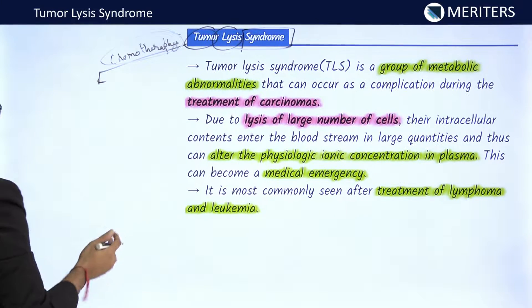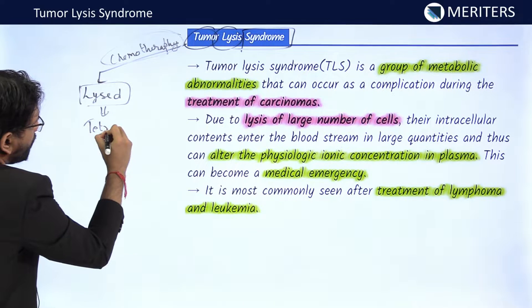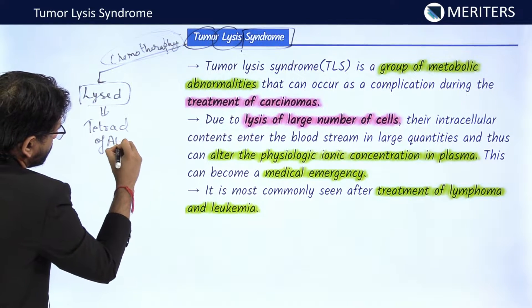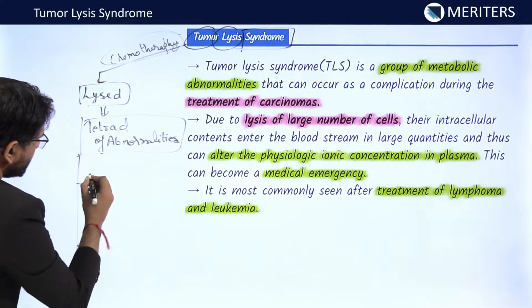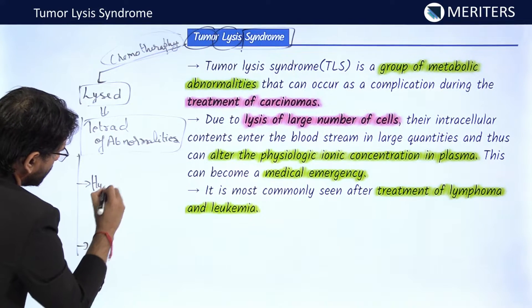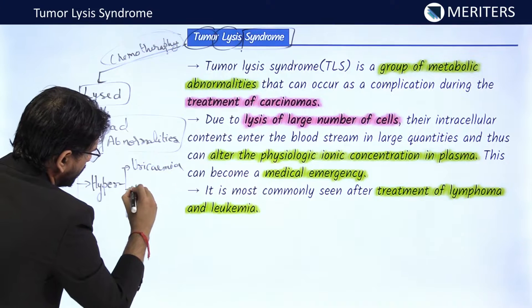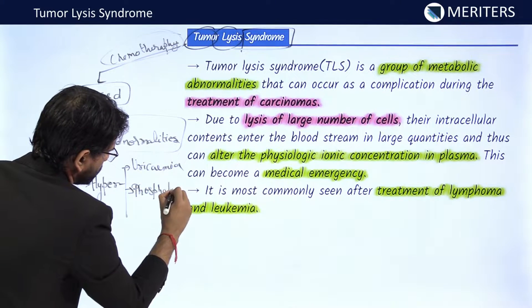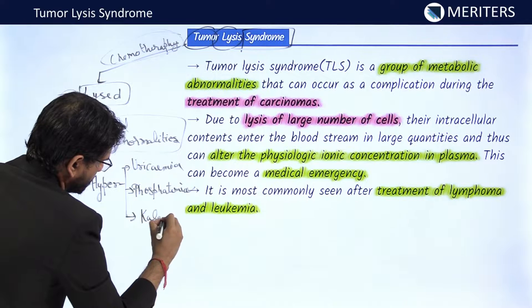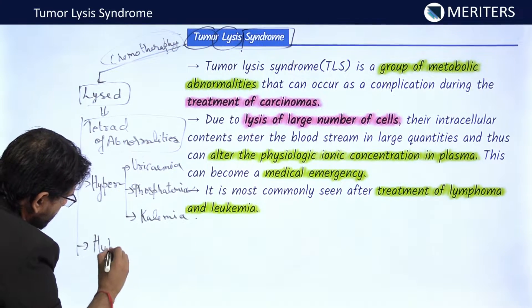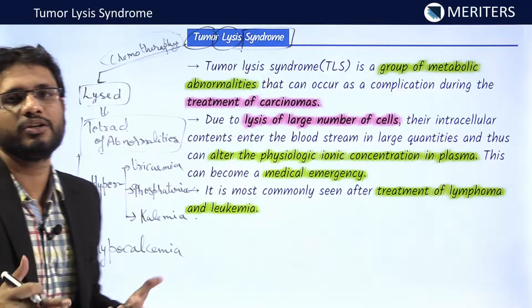When chemotherapy is given to the patient, some tumor cells will be lysed, and there will be a tetrad of abnormalities. There will be hyperuricemia, hyperphosphatemia, and hyperkalemia. Additionally, there will be a decrease in circulating calcium in the blood — that is hypocalcemia. This tetrad of abnormalities is seen in tumor lysis syndrome and is very important for your exam.